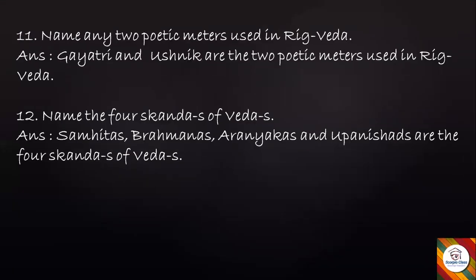Question: Name any two poetic meters used in Rig Veda. Answer: Gayatri and Ushnik are the two poetic meters used in Rig Veda. Students may also write other poetic meters given in the textbook. Only two were asked in the question, so any two of your choice from the textbook may be written.